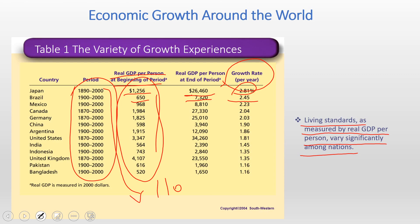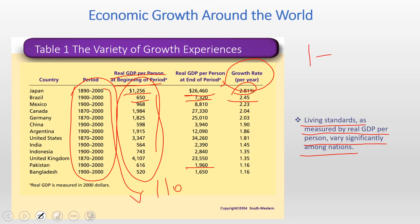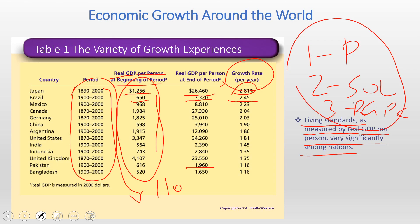At the lower end, Pakistan and Bangladesh had a real GDP per capita of $616 in 1900 and $1,960 in 2000, representing a growth rate of only 1.16% per year. This data illustrates economic growth around the world over approximately 110 years and how countries grew their real GDP per person. To summarize: productivity, standard of living, real GDP per capita, and how these three concepts are linked are the key takeaways from this part.